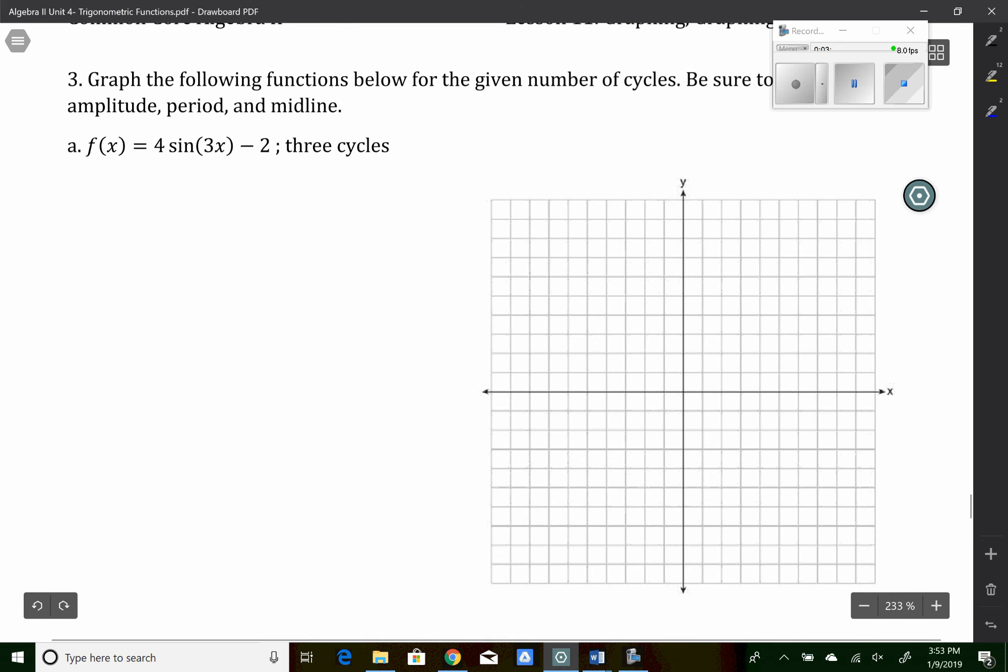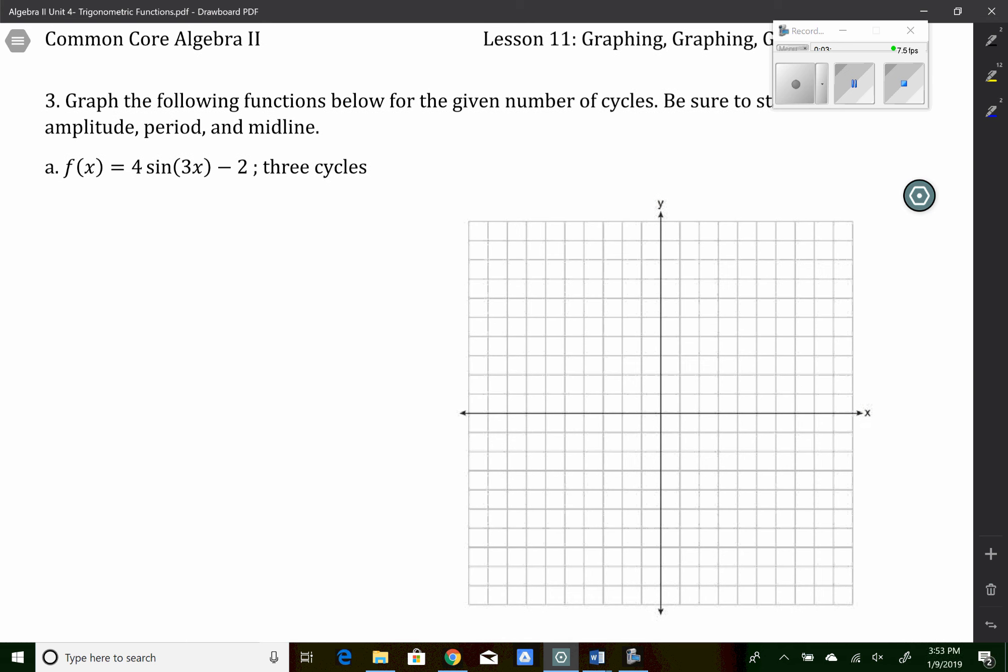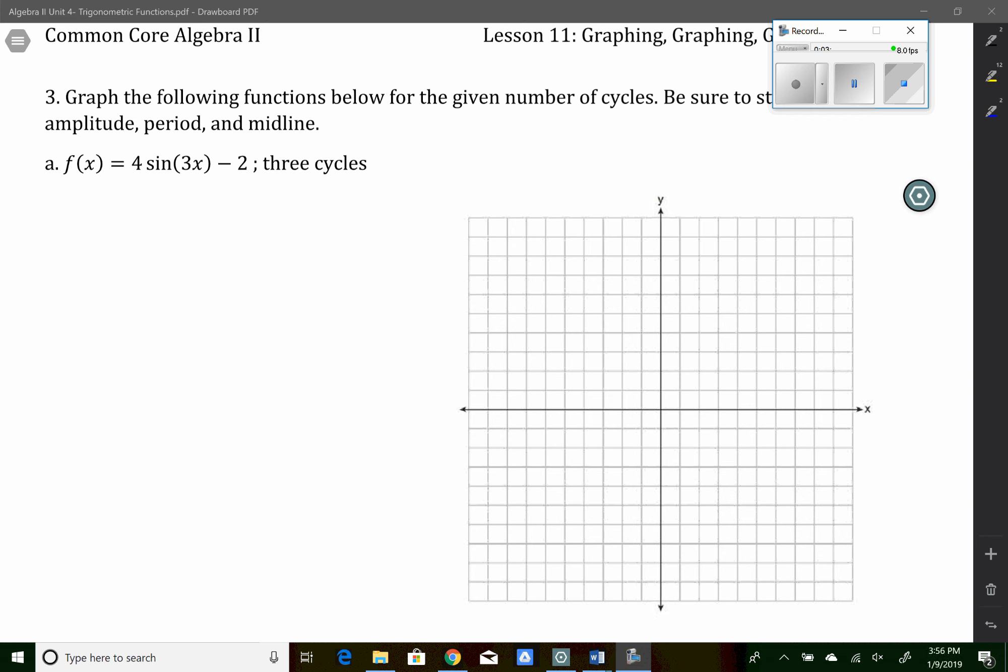So number three says to graph three cycles of a function. So it wants us to graph three cycles of this sine function. All right. So the amplitude is 4. The midline is y equals negative 2. And the frequency is 3.